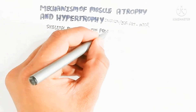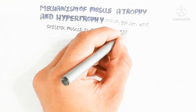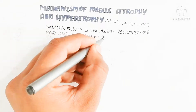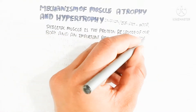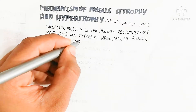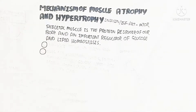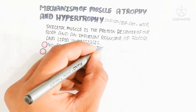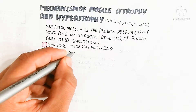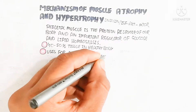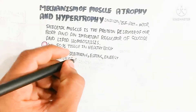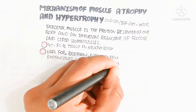The skeletal muscle is the protein reservoir of our body — it stores protein and is an important regulator of glucose, because glycogen is present which is glucose converted into glycogen for less water consumption. On the basis of requirement, glycogen is converted back into glucose, which is known as glycogenolysis. About 40-50% of tissue in a healthy body is muscle, used for breathing, eating, energy expenditure, glucose, amino acids, and lipid homeostasis for a high quality of life.